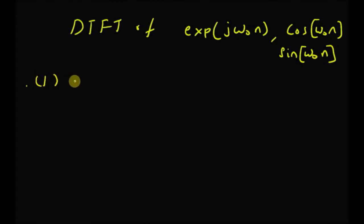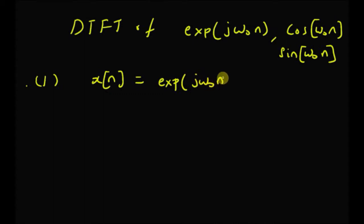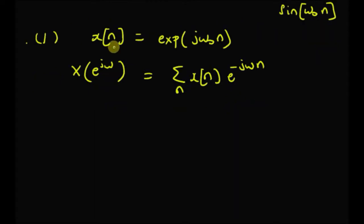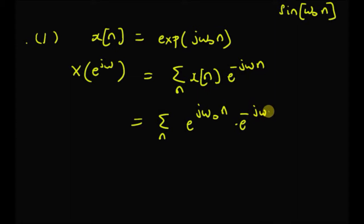The first function, the complex exponential, is x(n) = e^(jω₀n). By definition, the DTFT is given by X(e^(jω)) equal to the sum of x(n)·e^(−jωn). Substituting x(n) = e^(jω₀n), we have the sum of e^(jω₀n)·e^(−jωn), which is an infinite series that can be rewritten as the sum of e^(−j(ω−ω₀)n).